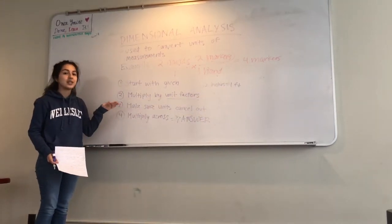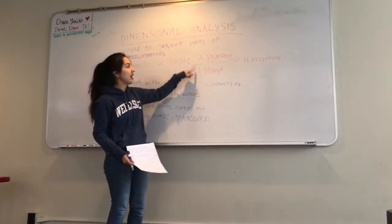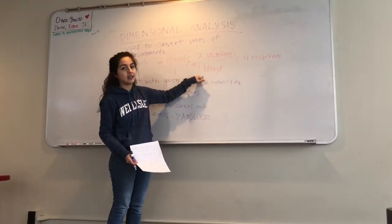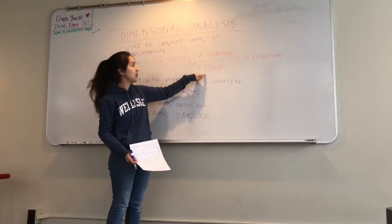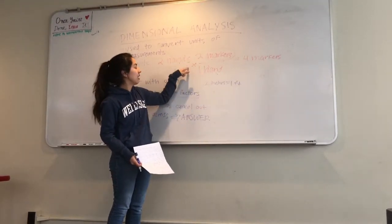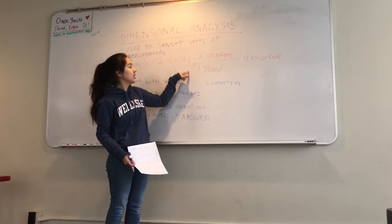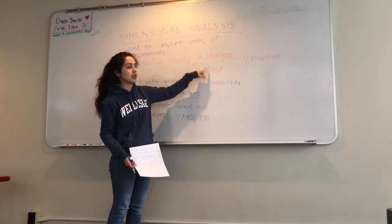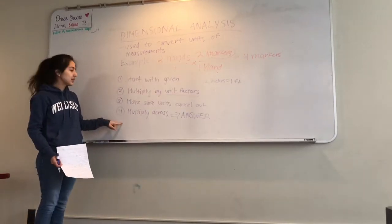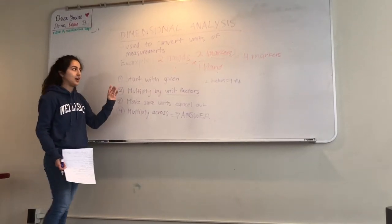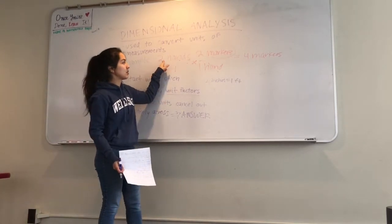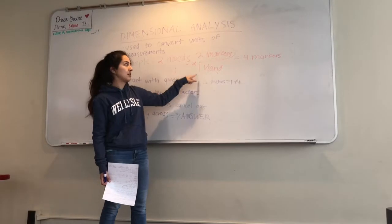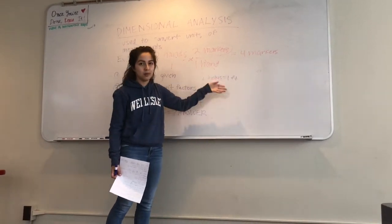The third step is to make sure that your units cancel out. If I had put the hand up here and the markers down here, these hands would not cancel out. So you need to make sure that your units are on the opposite sides of your divisor. So you have one in the numerator, one in the denominator, and so the ones you don't want cancel out. The final step is to multiply across. Do the math to get your answer. In this example, we were able to multiply across. 2 times 2 is 4, and in the bottom it's 1 times 1, so we get 4 over 1, which is the same thing as 4.